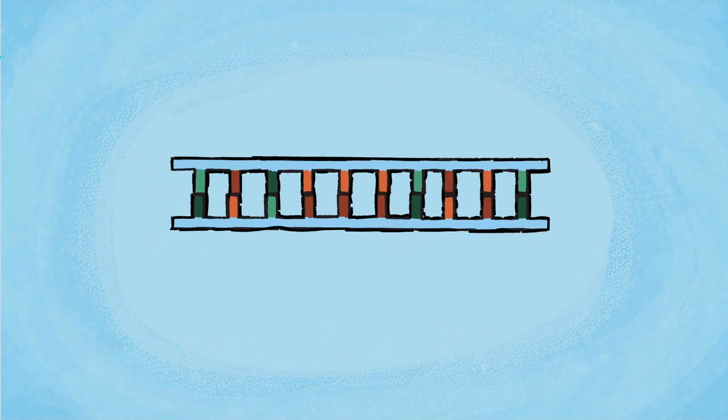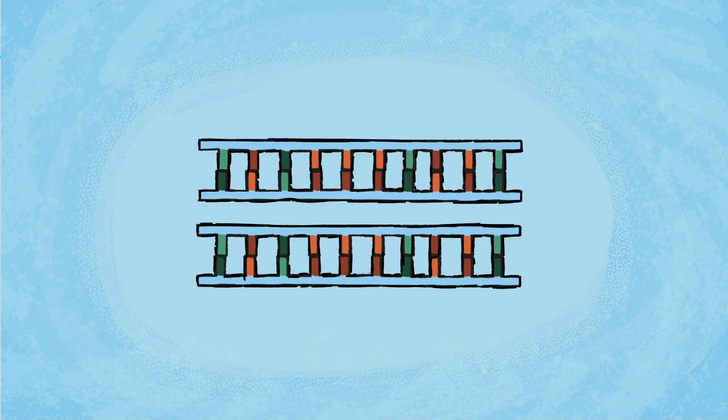Each PCR cycle doubles the amount of target sequence, or amplicon, in the reaction.